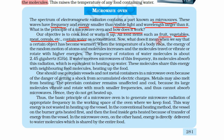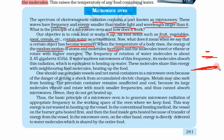What does it mean when we say that a certain object has become warmer? When the temperature of a body rises, the energy of the random motion of atoms and molecules increases. To say something has become warmer means the temperature of the body has risen and the energy of random vibration or motion of atoms has increased. If the amplitude of this vibration increases, then we can say that the thing is more warm.